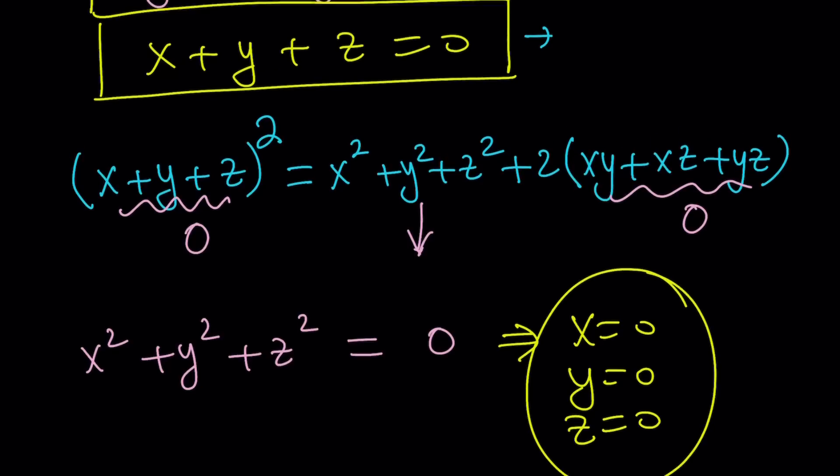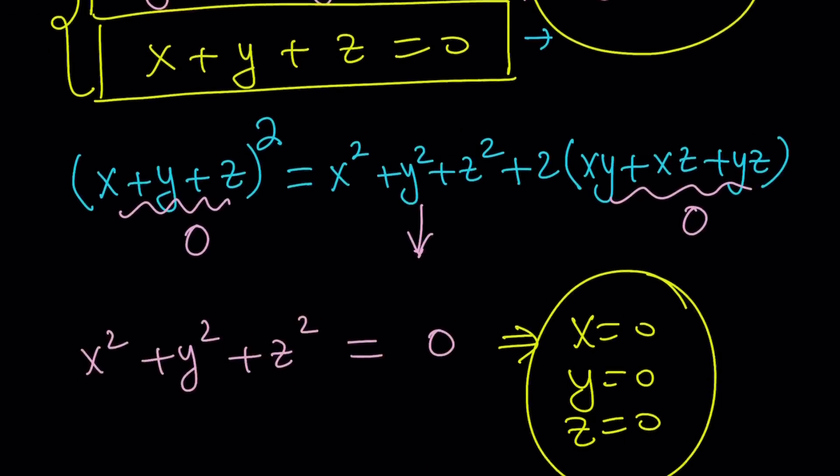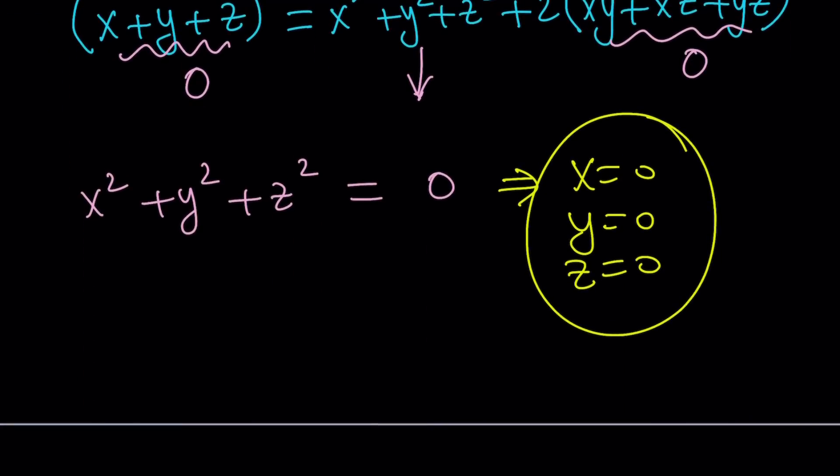But this is problematic. Remember the other condition. XYZ, the product, should not be zero. But if X, Y, Z are all zero, which we already said, that is going to satisfy both of these equations, then you're going to run into problems. Because the reciprocal of zero, what's the reciprocal of zero? It doesn't exist, right? It's undefined. Okay, so there are no solutions. Well, let me just say, there are no real solutions.